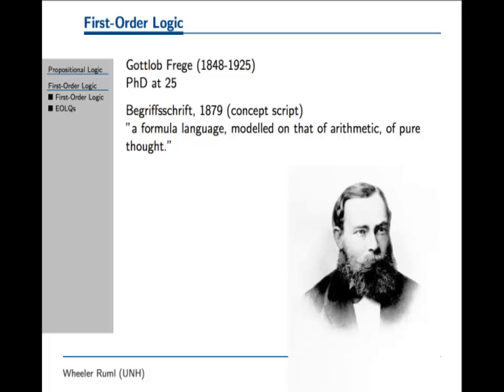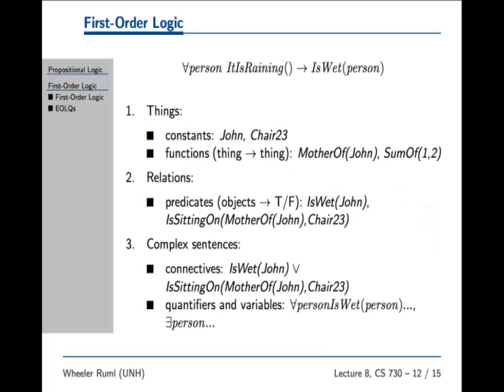Now First-Order Logic is more complicated than propositional logic. Propositional logic, there're just propositions and connectives. And I guess, is negation a connective? I don't know. It's negation. In First-Order Logic, we have multiple kinds of things. We don't just have true false. We've got things and relations.